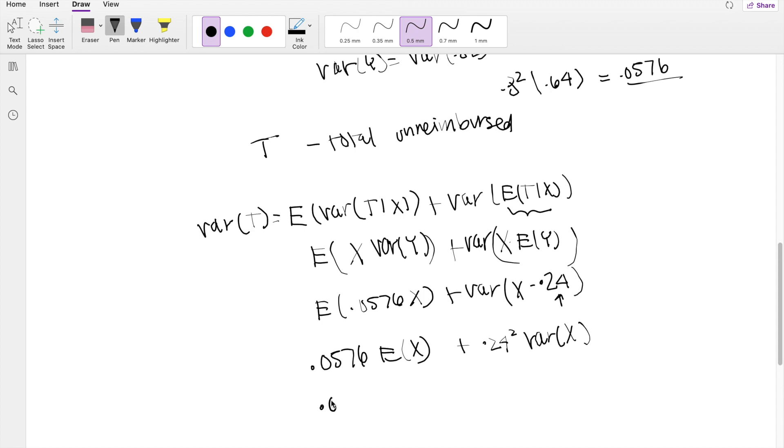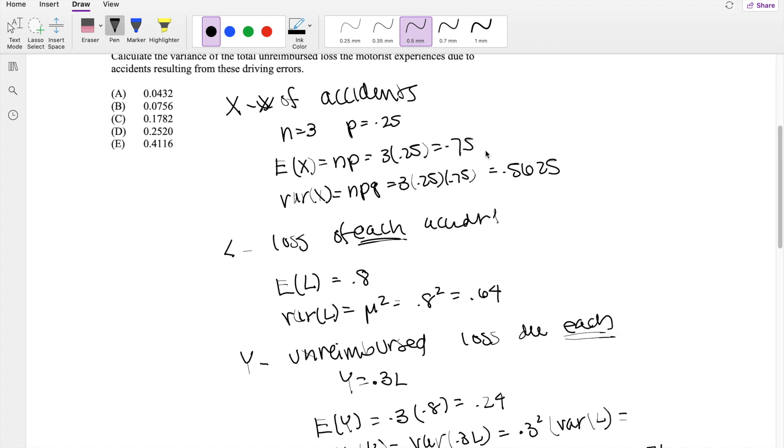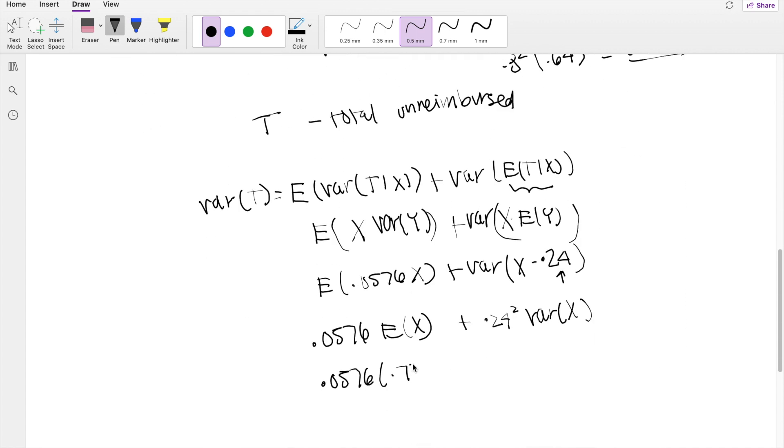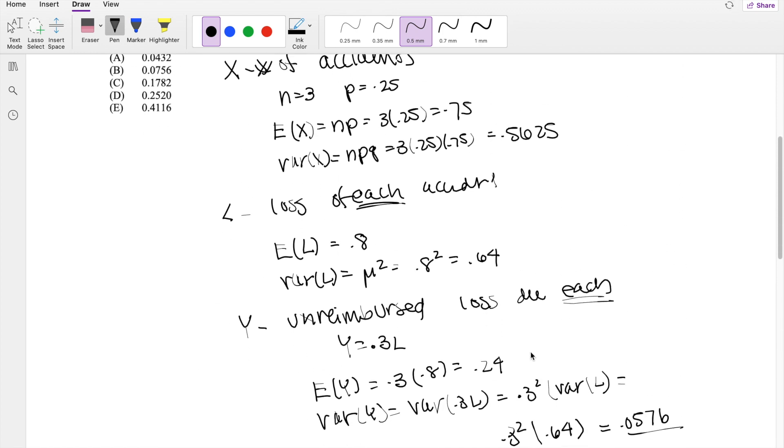So, and then now we know the expected value of X where X is the number of accident is going to be equal to 0.75. And 0.24 squared, that variance of X, is going to be equal to 0.5625.